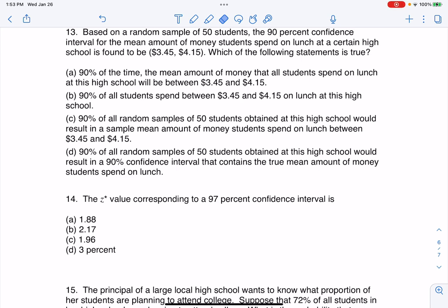Hey everyone, let's take a look at our next multiple choice question. Based on a random sample of 50 students, the 90% confidence interval for the mean amount of money students spend on lunch at a certain high school is found to be $3.45 to $4.15. Which of the following statements is true?